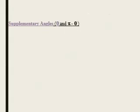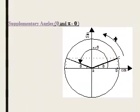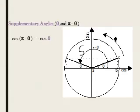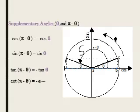Now, between alpha and pi minus alpha — on the circle, this is in the second region, where only the sine is going to be positive. That means cosine of (pi minus alpha) is minus cosine alpha, sine of (pi minus alpha) is sine alpha, and the tangent is minus tangent alpha. Cotangent follows the tangent.